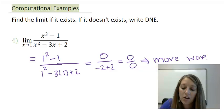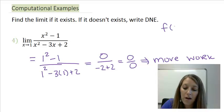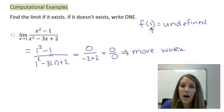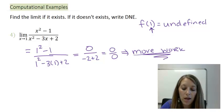That tells me that I need more work. So my function is officially undefined here because I have 0 in my denominator. But I do not care what's happening at 1 specifically. I care what's happening about 1. So I need to do this by using more work, and the more work I'm going to do in this example is by factoring.